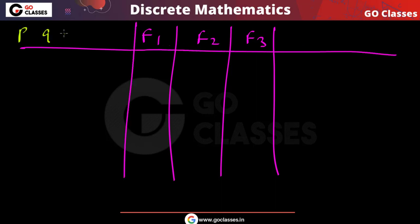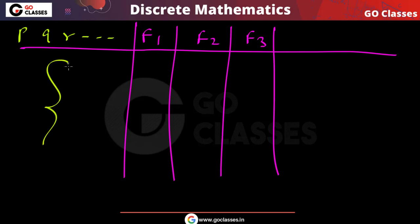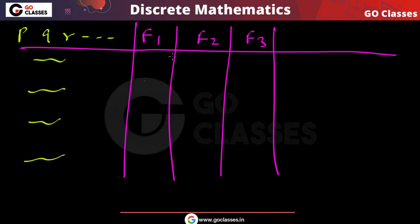It does not matter what the propositional variables are. For example, if there are 10 propositional variables, there will be 2^10 rows in the truth table; if there are 5 propositional variables, there will be 32 rows. Anyway, we have propositional formulas f1, f2, f3.